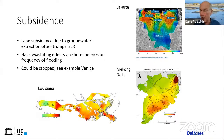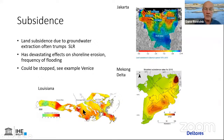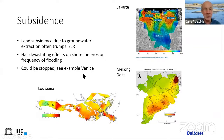Subsidence can be stopped — look at Venice, where after heavy water extraction for industry they stopped it in the sixties and subsidence reduced significantly. But in Jakarta we see up to 10 centimeters per year, and in the Mekong Delta maybe four centimeters per year. These are huge subsidence rates. There's ongoing research on what it is in Bangladesh — Michael Steckler may be able to say more about that later.